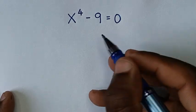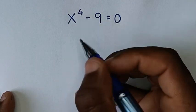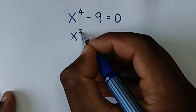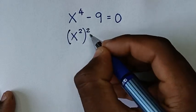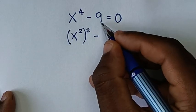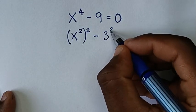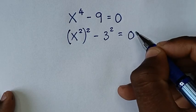We rewrite this by making it into square form: x to the power 4 becomes (x²)², and 9 becomes (3)², so we have (x²)² minus (3²) is equal to 0.